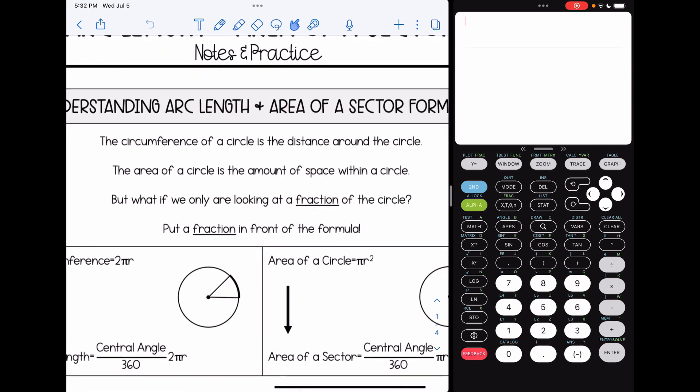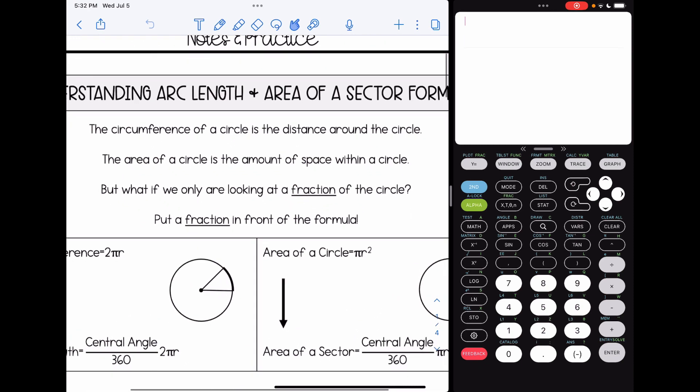We've learned in the past about circumference of a circle and how that's the distance around the circle. And you might remember that circumference is 2πr. The area of a circle is the amount of space within a circle, and that's πr². But what if we are only looking at a fraction of the circle? We're going to make this very simple, we just put a fraction in front of those formulas.